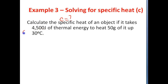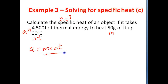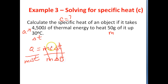Here is Q, here is the change in temperature, and here is the mass of the object. We know that Q equals M times C times delta T. We are trying to solve for C — get C all by itself on one side of the equal sign. We need to get rid of M and delta T, so we divide both sides by them. M cancels, delta T cancels, and now we've got our formula: C equals Q over M times delta T.